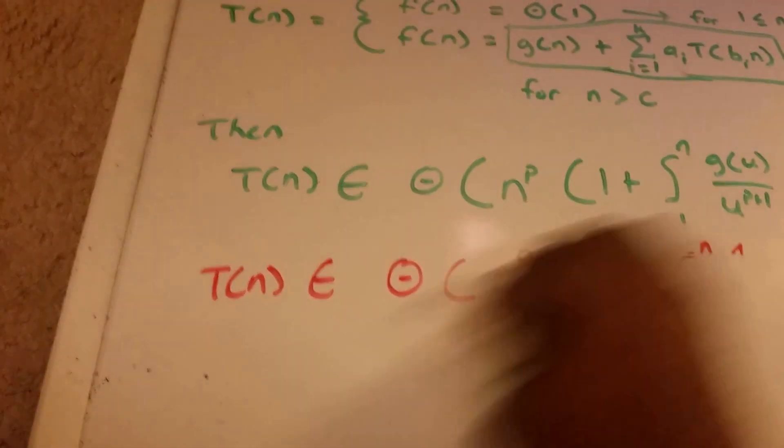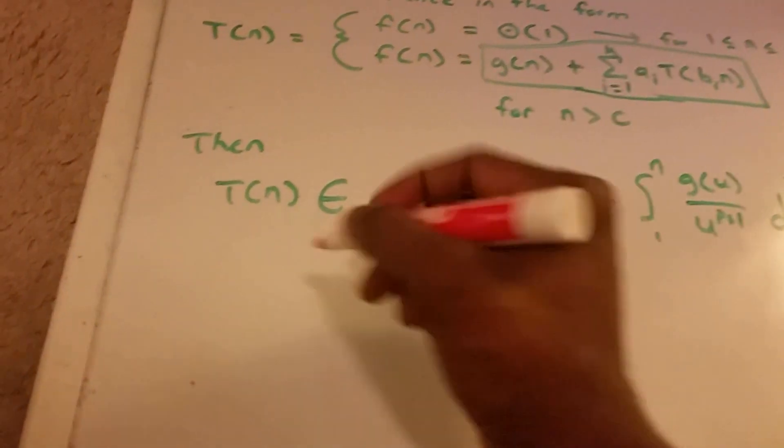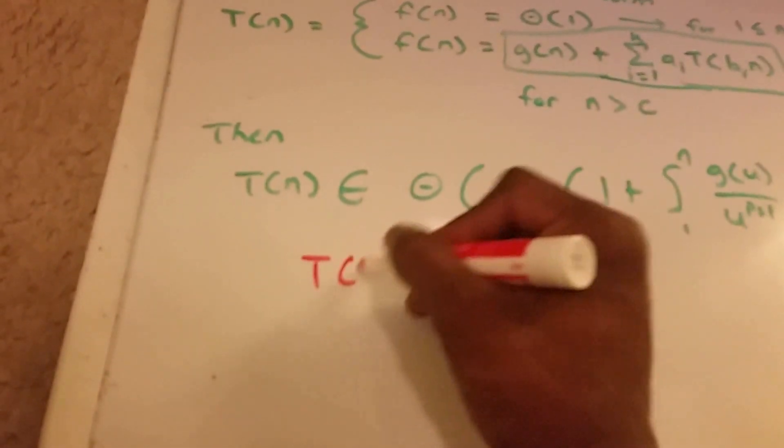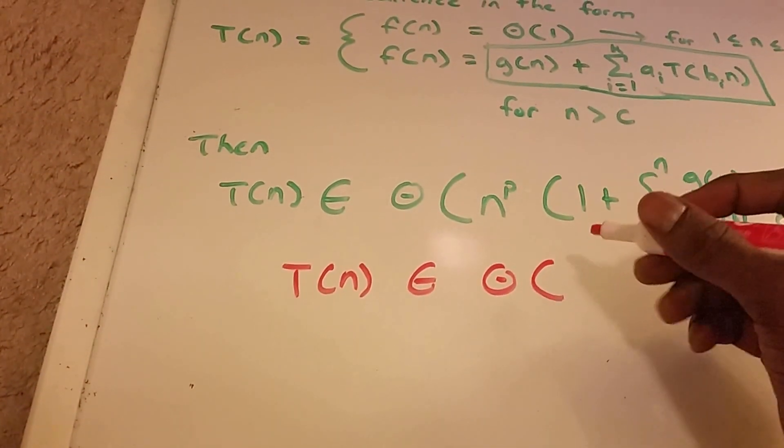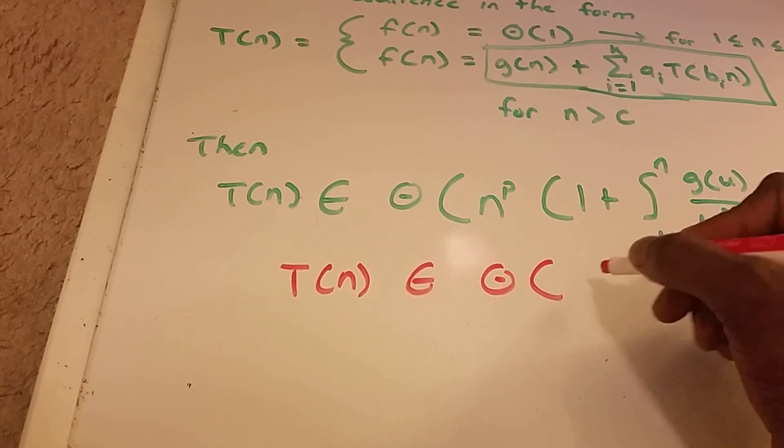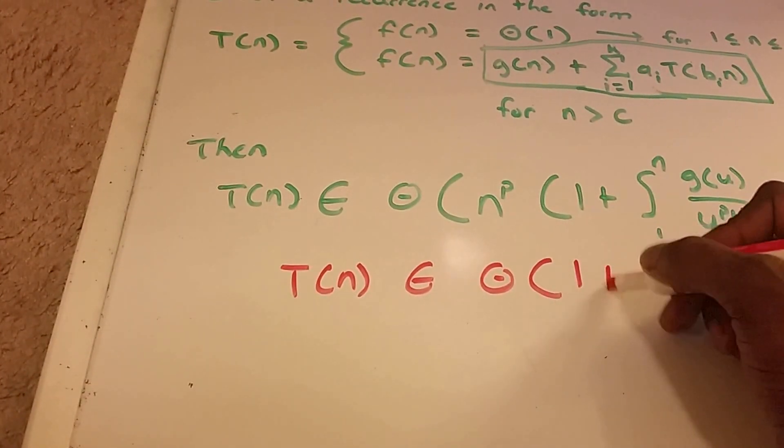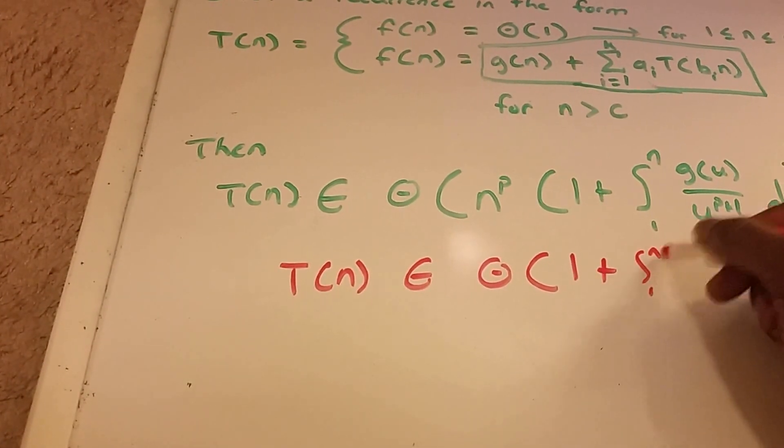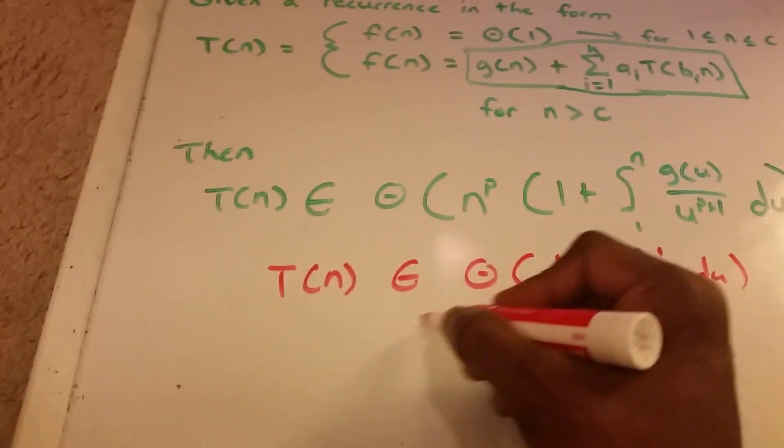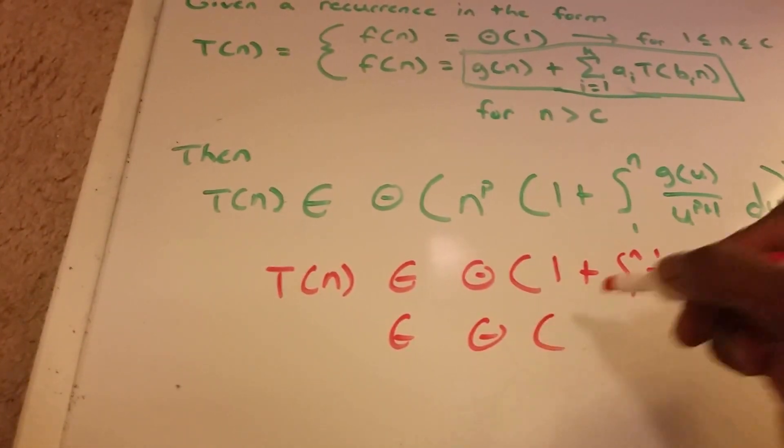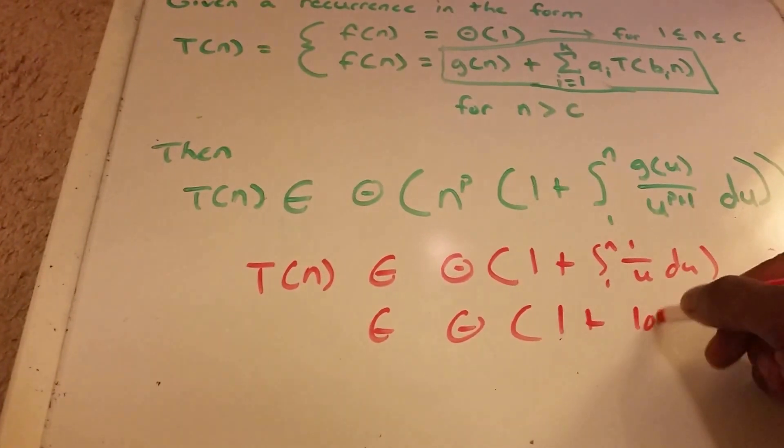And now I'm going to write this whole thing again. So now we get T of n belongs to theta of 1 plus 1 over u du. So this is theta of 1 plus log n